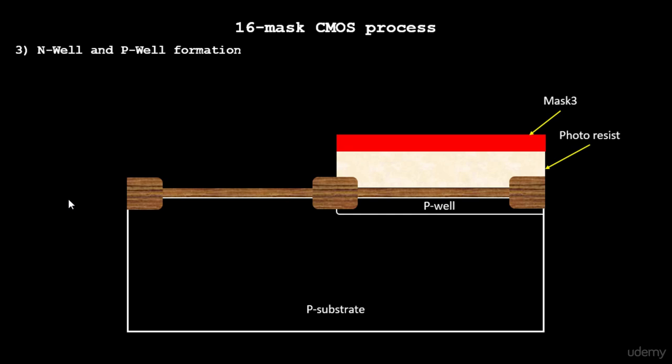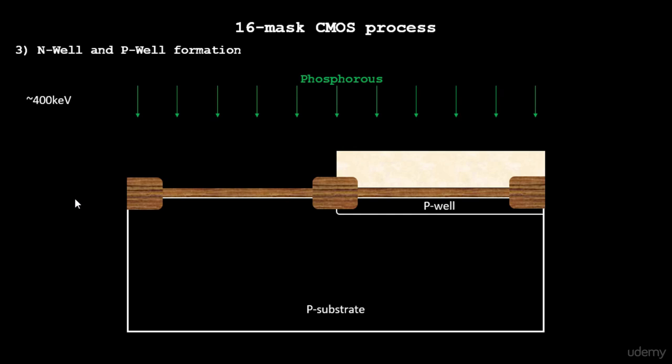In order to create an N-well, we need to use phosphorus as a material. Phosphorus is an N-type material and it's a bit heavier than boron. Ion implantation is again the same process.